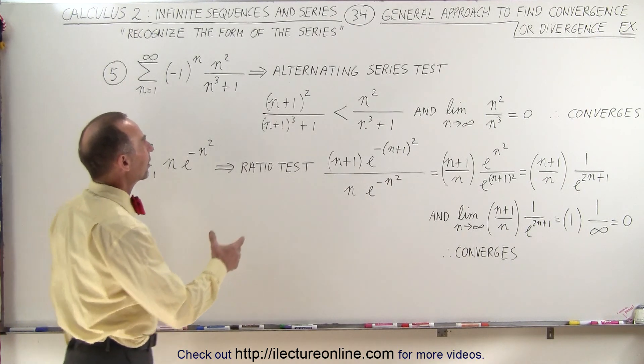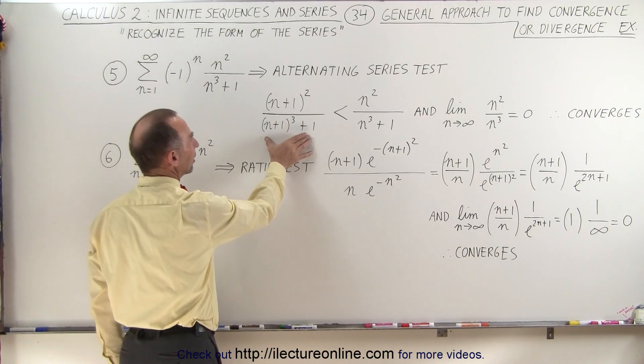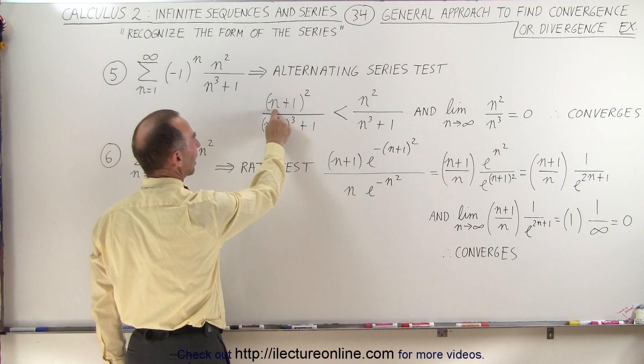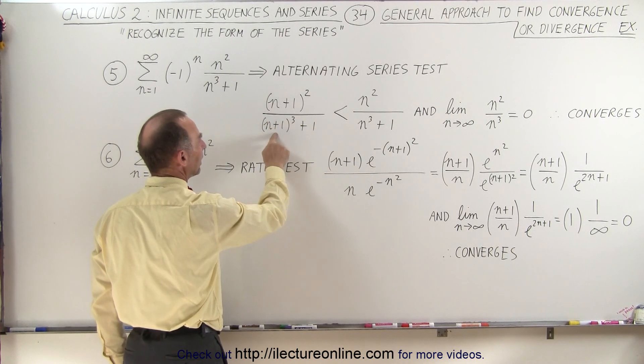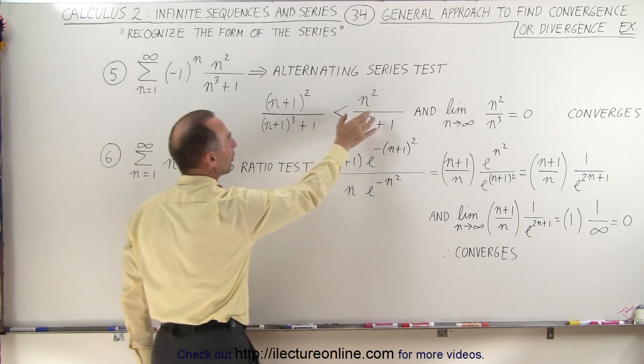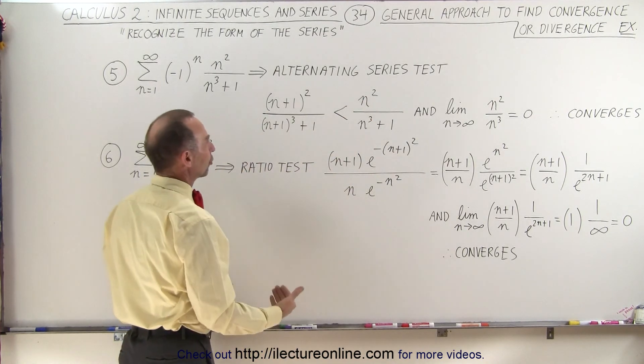Now if you use the alternating test, you want to see what the next term in the list will be. We simply increase n to n plus one in each case, and that should be less than when we don't increase n by one. Sure enough,